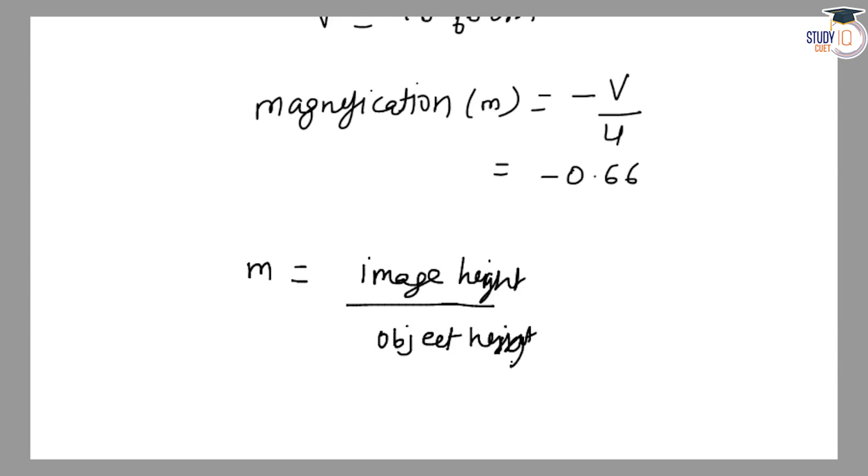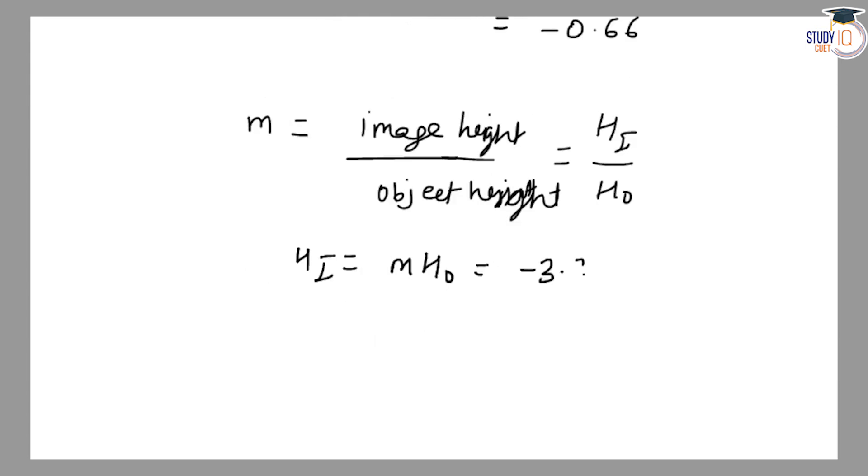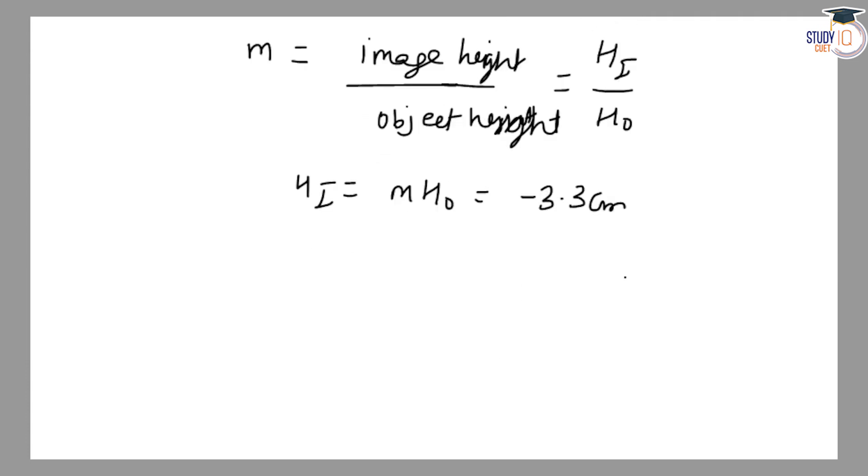Image height Hᵢ equals m times H₀, which is -3.3 cm. The negative sign in image height indicates the image is inverted.